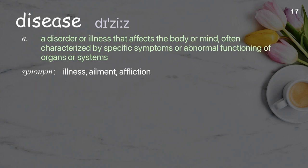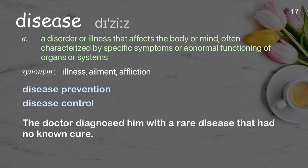Disease: a disorder or illness that affects the body or mind, often characterized by specific symptoms or abnormal functioning of organs or systems. Examples: disease prevention, disease control. The doctor diagnosed him with a rare disease that had no known cure.